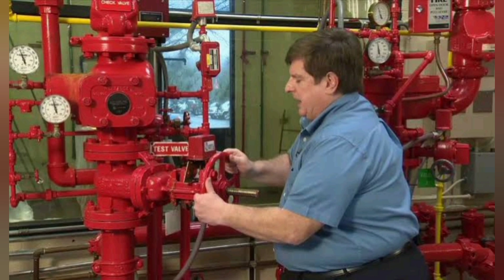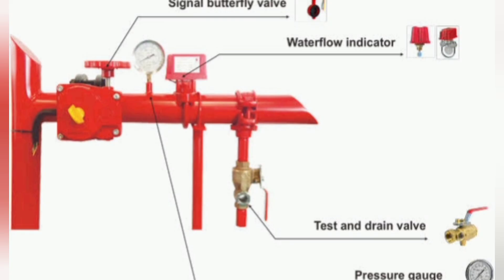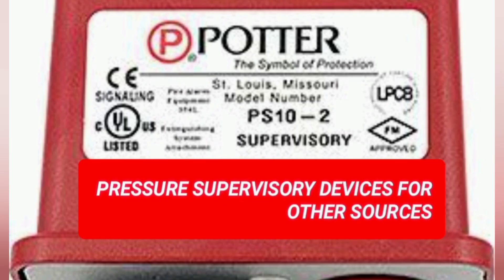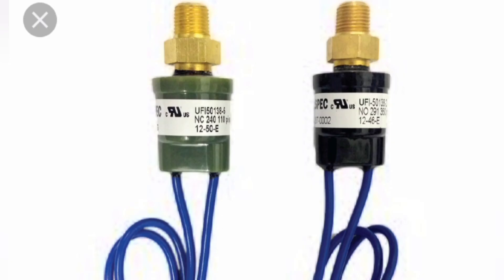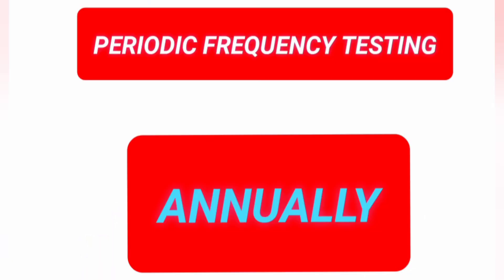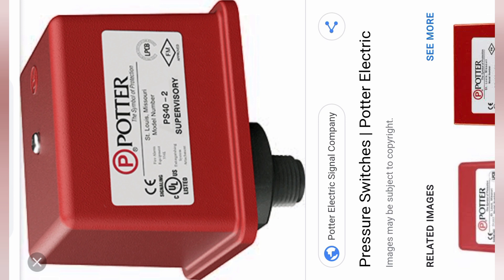Verify the switch does not reset during full travel of the valve stem. The next one is pressure supervisory devices for other sources. The method is to operate the switch and verify receipt of signal is obtained where the required pressure is increased or decreased from the normal operating pressure by an amount specified in approved design documents.